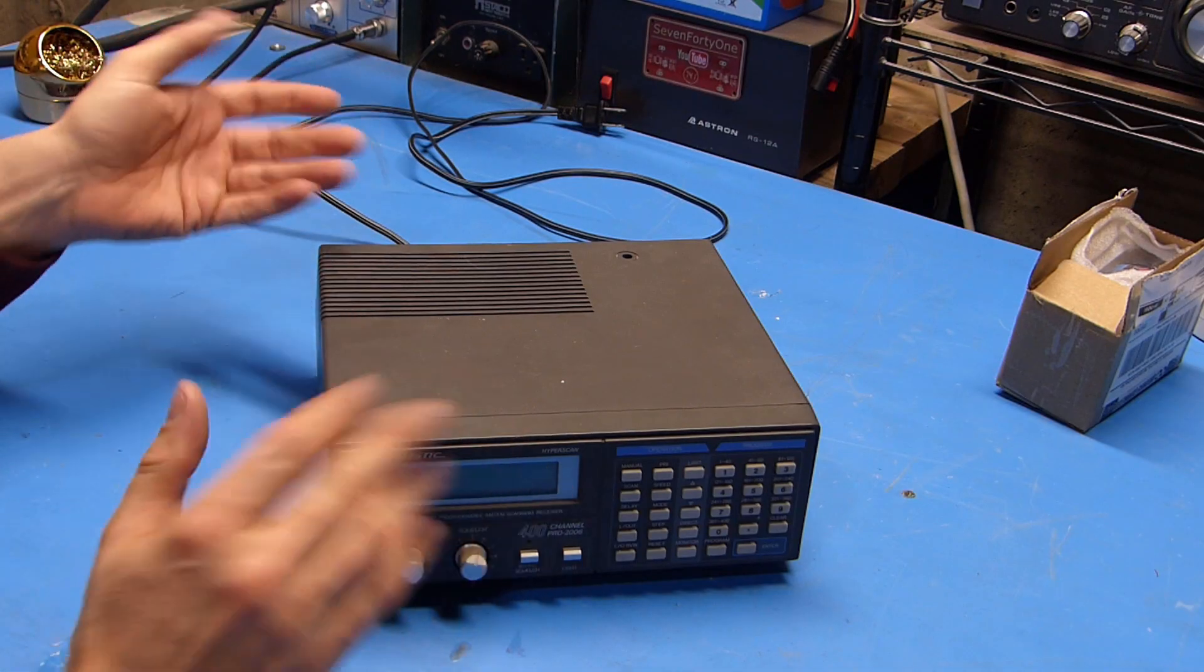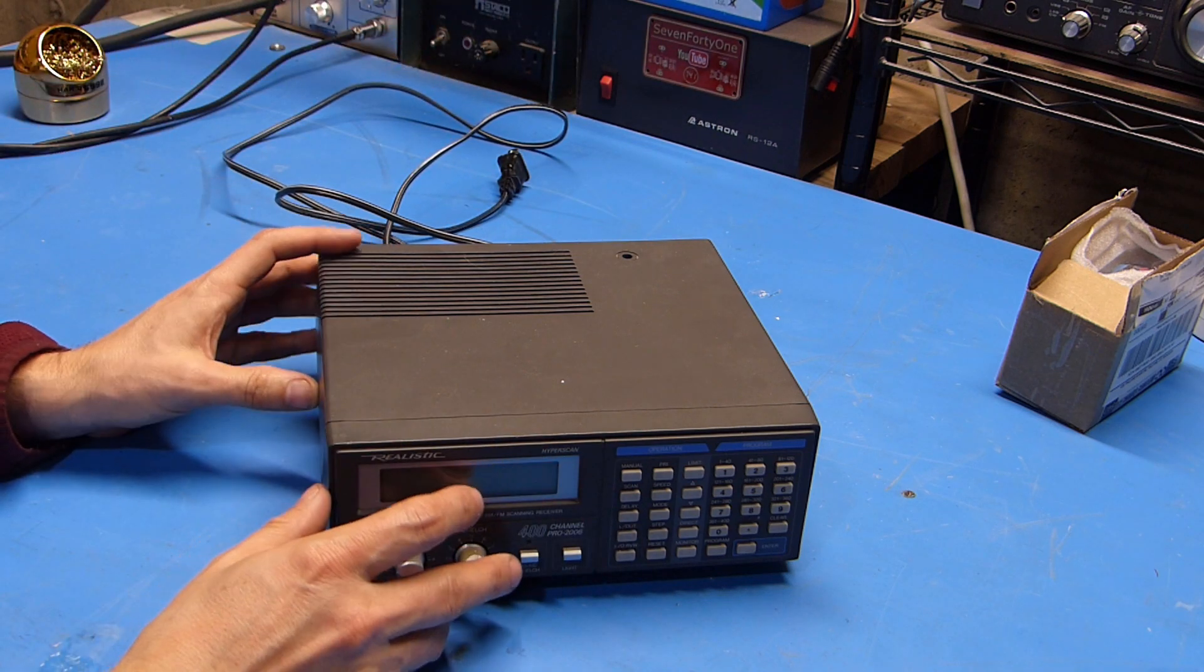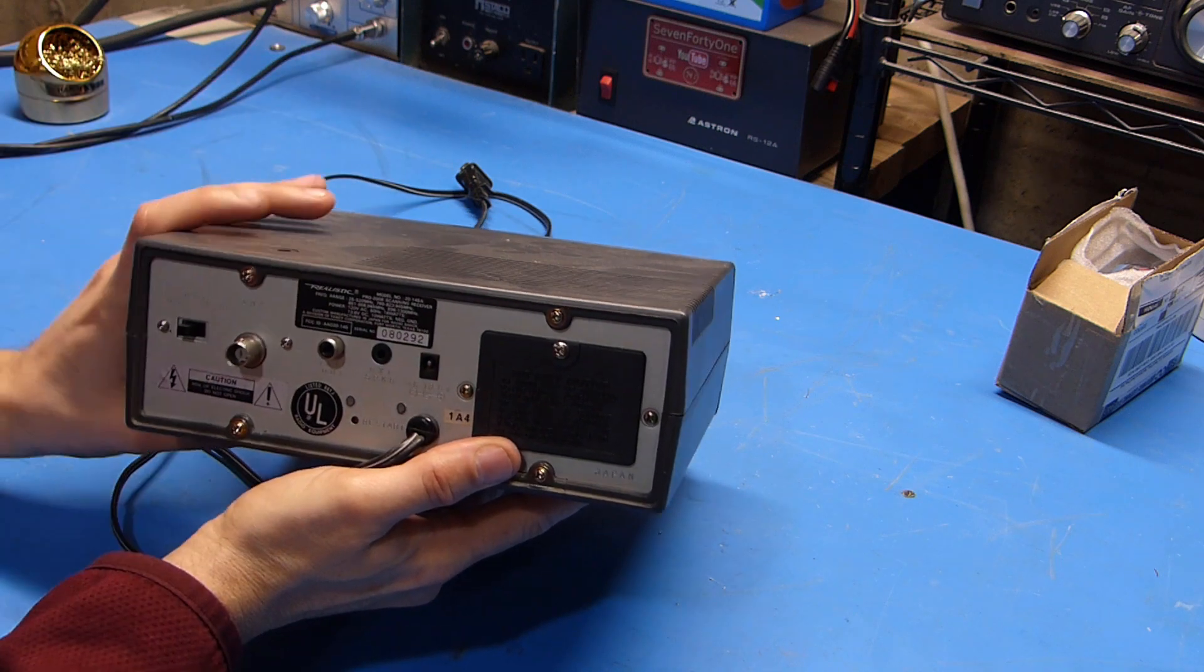Okay so we're over here at the bench. I've got the radio unplugged and the first thing we'll need to do is get it apart. Looks like there's four screws on the back. I'm going to start with those.